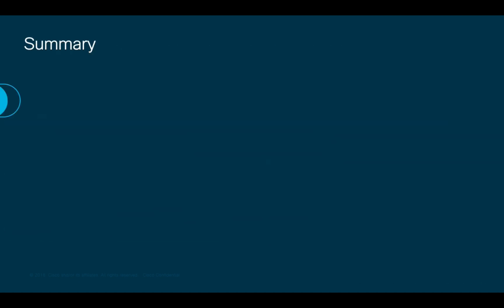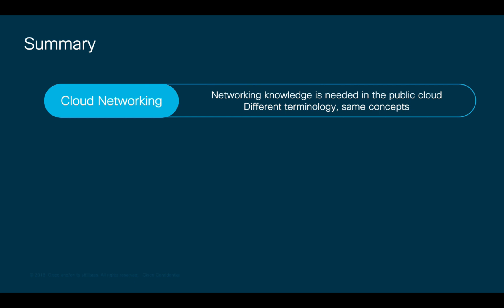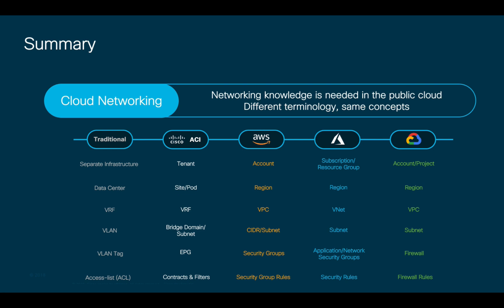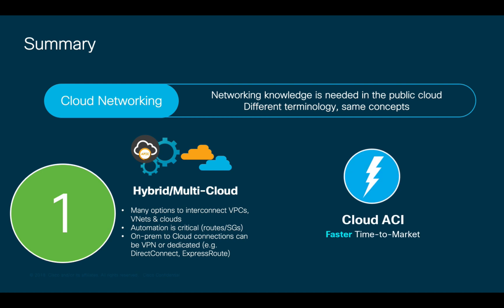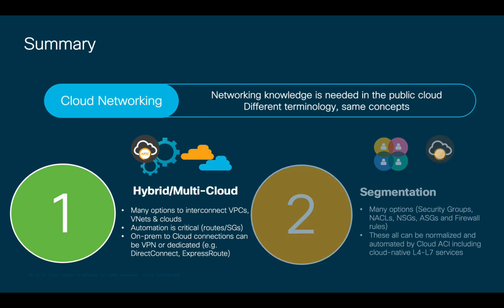As a summary, networking knowledge is very much needed in the public cloud as well. Although there is different terminology for each cloud provider, the concepts are very similar to what you already know. There are multiple networking elements you will have to configure and manage, which may increase complexity and potentially reduce consistency in your multi-cloud environment. ACI can help automate the creation of your network configuration across multiple types of clouds, unifying and normalizing your operational model without sacrificing any cloud-native services. Not only is this important to provide connectivity and identify issues faster, but also to keep security consistent by defining your configuration once and letting ACI enforce it anywhere.